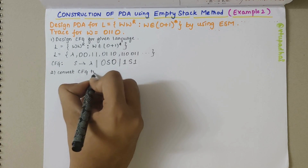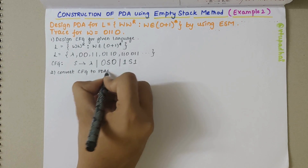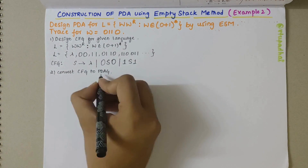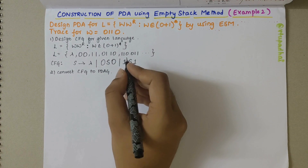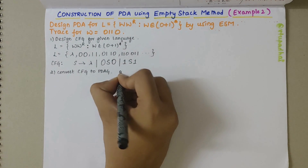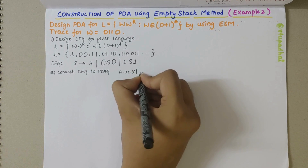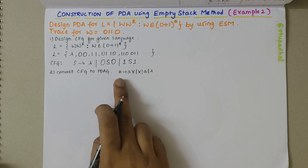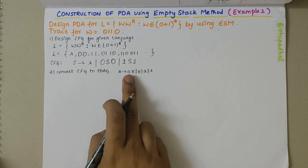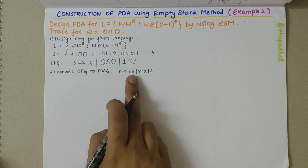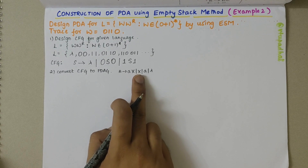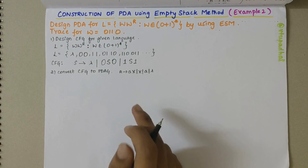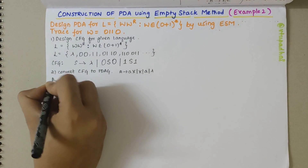To convert from CFG to PDAG, I need to know the form of PDAG. The form is: A derives a·X1·X2...Xn, or just a non-terminal, or just a terminal, or lambda. The first element must be a terminal followed by any number of non-terminals, or it can be an empty string. Let me convert this CFG to PDAG.